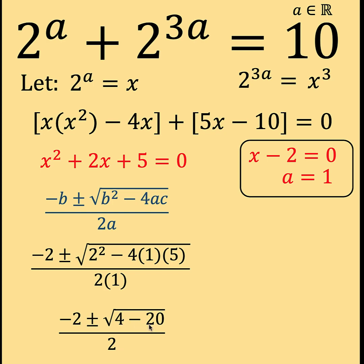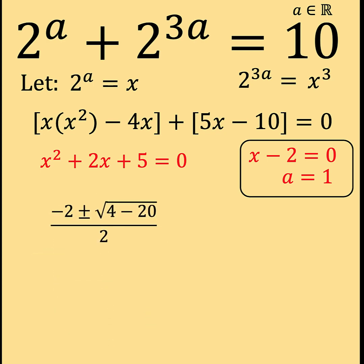4 minus 20 is negative 16. And so we arrive at an imaginary number here. The square root of negative 16 is equal to 4i. Copy all the rest. And simplifying, we have now this result. Negative 2 over 2 is negative 1. Plus or minus is copied. 4i divided by 2 is 2i. Which is clearly not a real number.